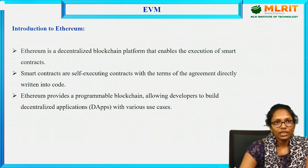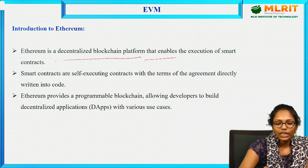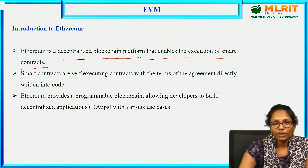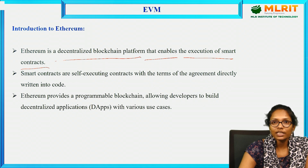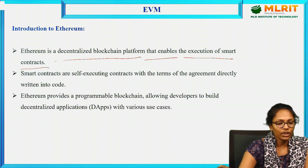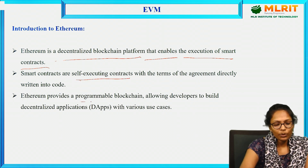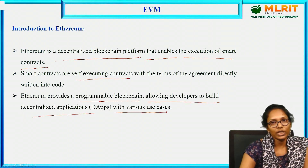Introduction to Ethereum: Ethereum is a decentralized blockchain platform that enables the execution of smart contracts. As discussed in the previous video, Ethereum is a decentralized platform where we can execute smart contracts. A smart contract is a self-executing code — whenever a certain condition is true, the code will be executed automatically. Ethereum provides a programmable blockchain allowing developers to build decentralized applications with various use cases.